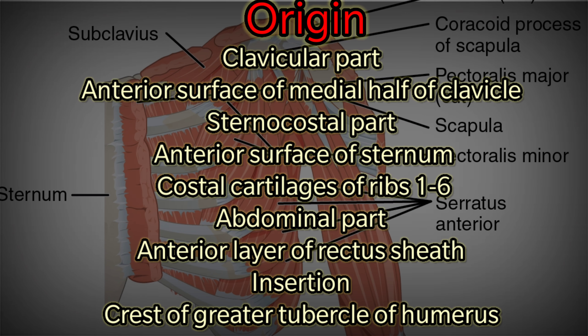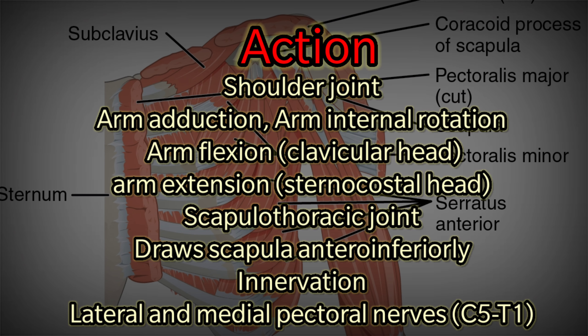Origin: clavicular part — anterior surface of medial half of the clavicle; sternocostal part — anterior surface of sternum and costal cartilage of ribs one to six; abdominal part — anterior layer of rectus sheath. Insertion: crest of greater tubercle of humerus.